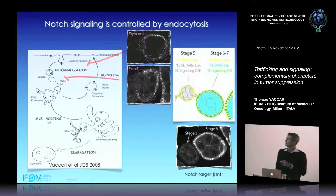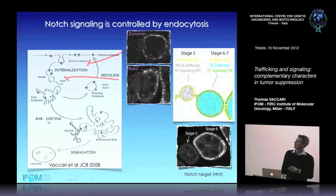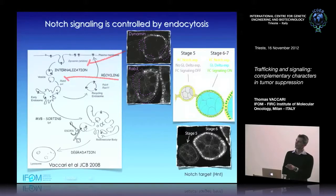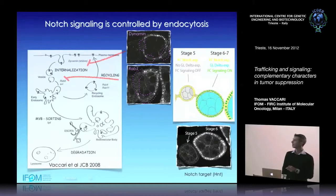In another example, we blocked entry into the early endosome by making cells mutant for RAB5, a GTPase very important for fusing vesicles into the early endosome — and again you see loss of activation of Notch.